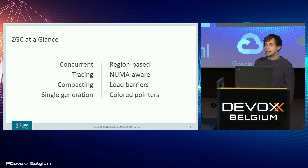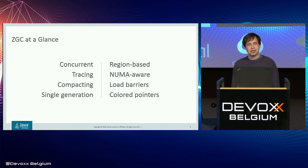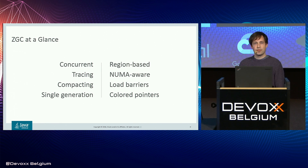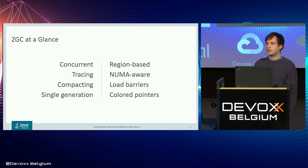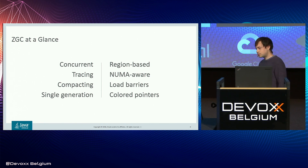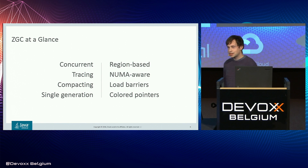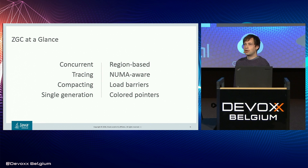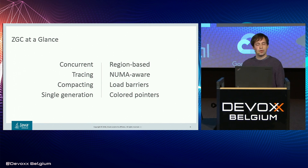At a glance, ZGC is a concurrent tracing and compacting garbage collector. You mark all your objects from the roots, do the transitive closure of that, and do defragmentation, freeing up contiguous regions of memory so that you can do bump pointer allocation very efficiently. Currently it is a single generation garbage collector, which has more cons than pros, which is why we are looking into adding a young generation to ZGC.